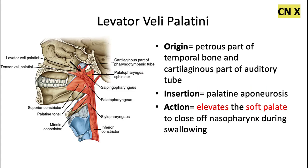Next we have the levator velli palatine — not to be confused with the tensor velli palatine. Like all of the other soft palate muscles except the tensor, this one is innervated by cranial nerve 10. It originates from the petrous part of the temporal bone as well as the cartilaginous part of the auditory tube, and it inserts into the palatine aponeurosis. The action, as the name suggests, is to elevate the soft palate in order to close off the nasopharynx during swallowing.